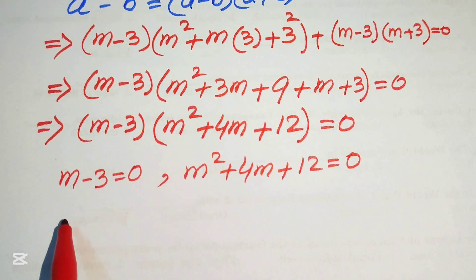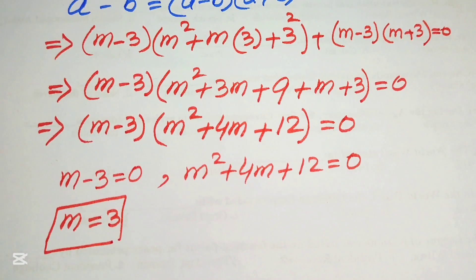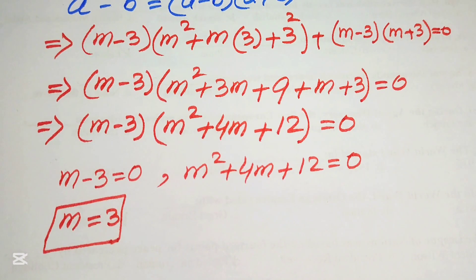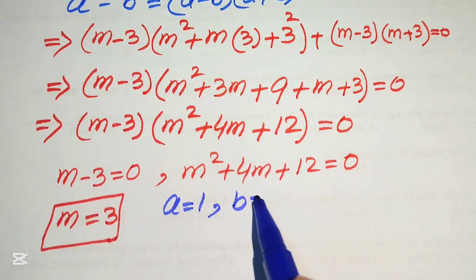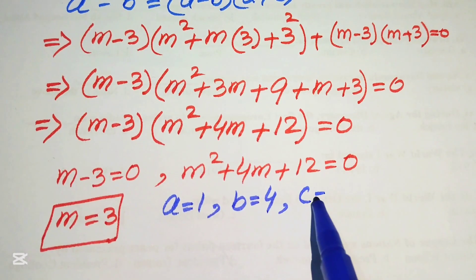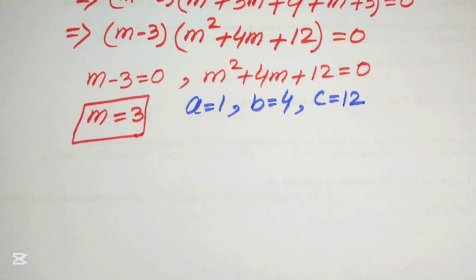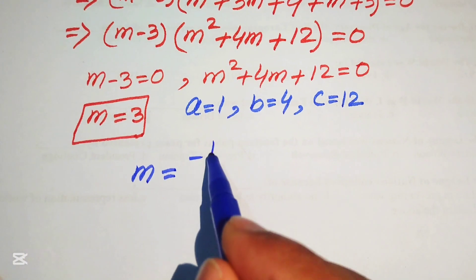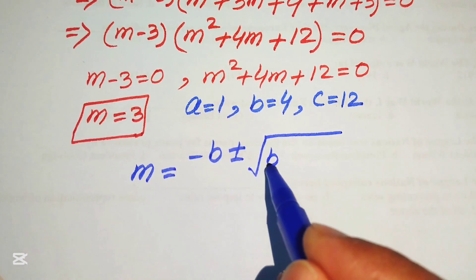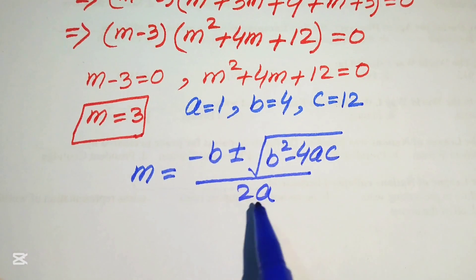From the first case we easily get m equals to 3. To find the other values of m we solve the quadratic equation. The coefficients are a equals to 1, b equals to 4, and c equals to 12. We apply the quadratic formula: m equals minus b plus or minus square root of b squared minus 4ac, divided by 2a.